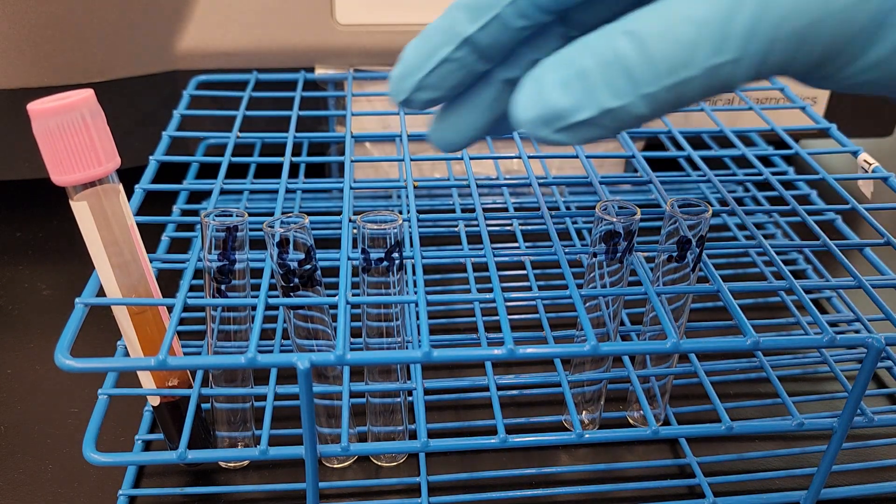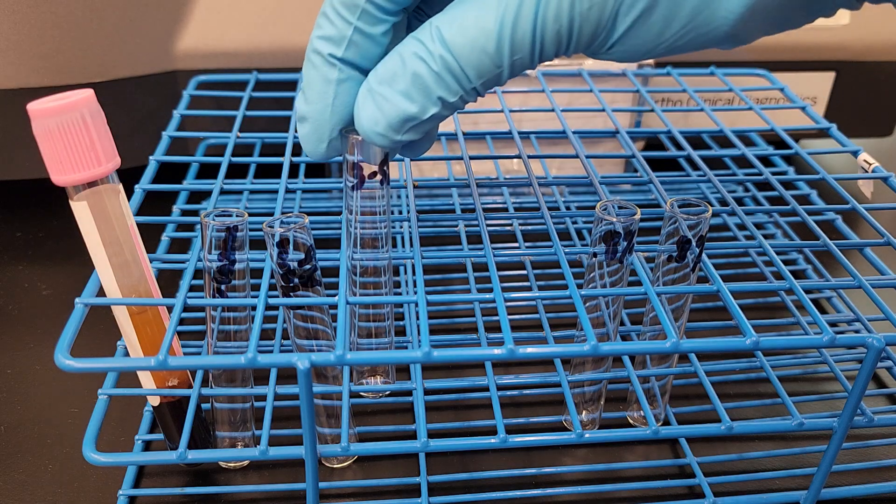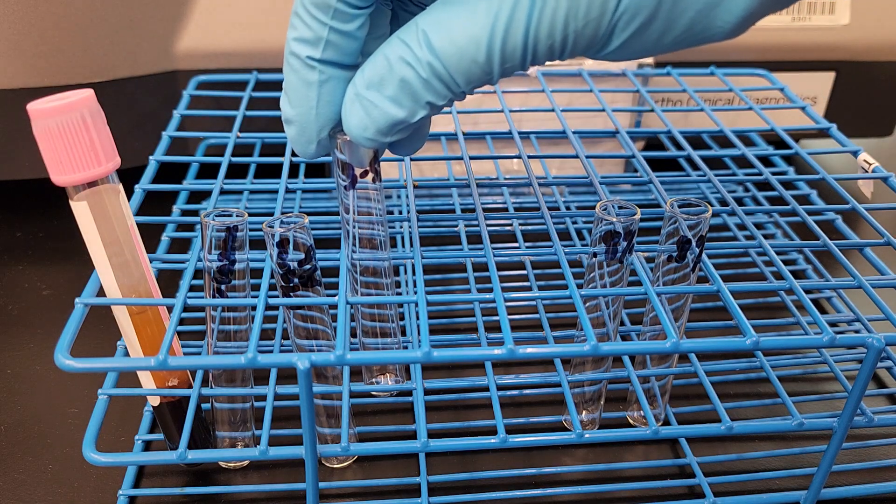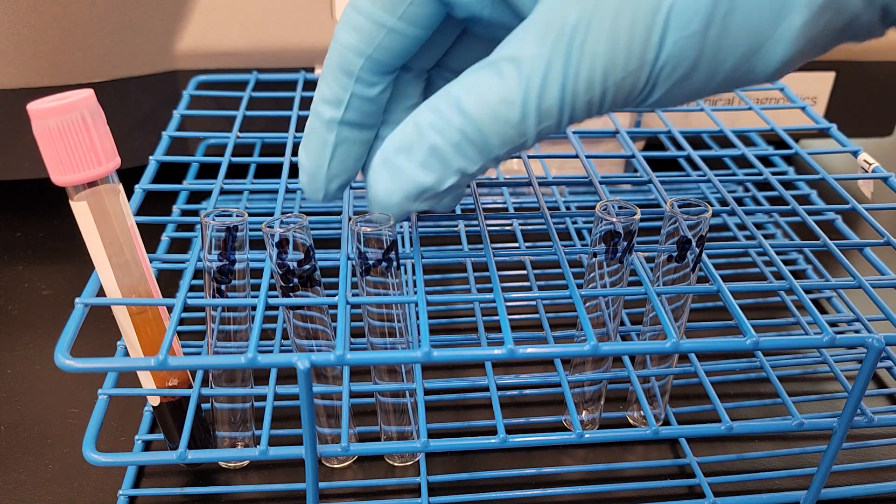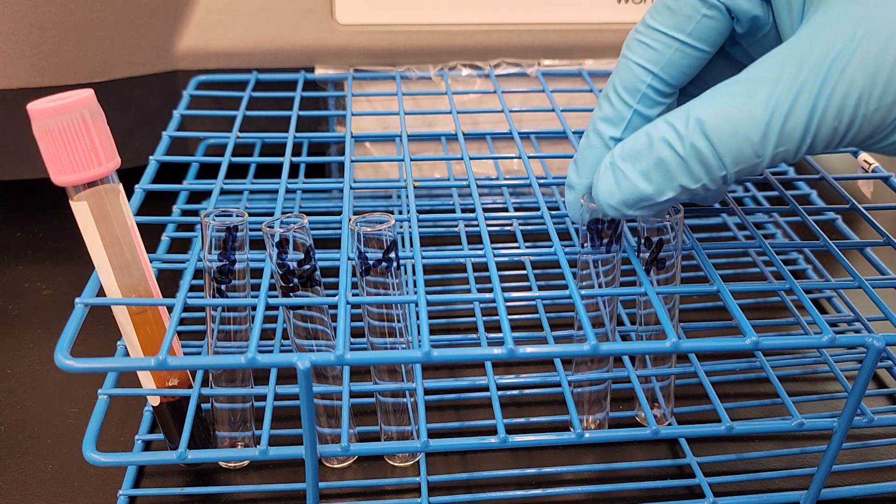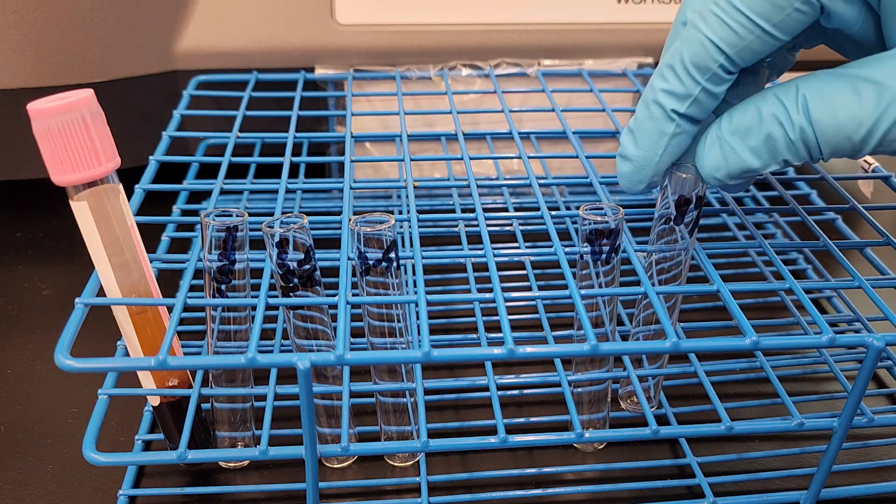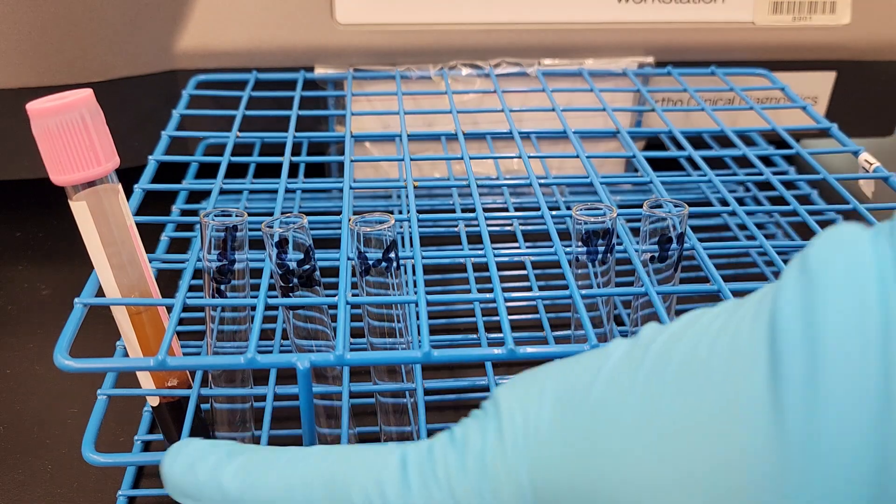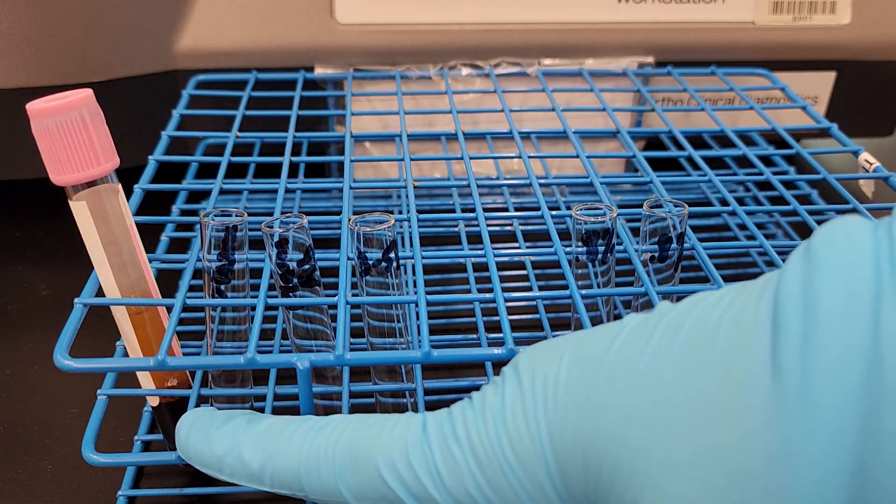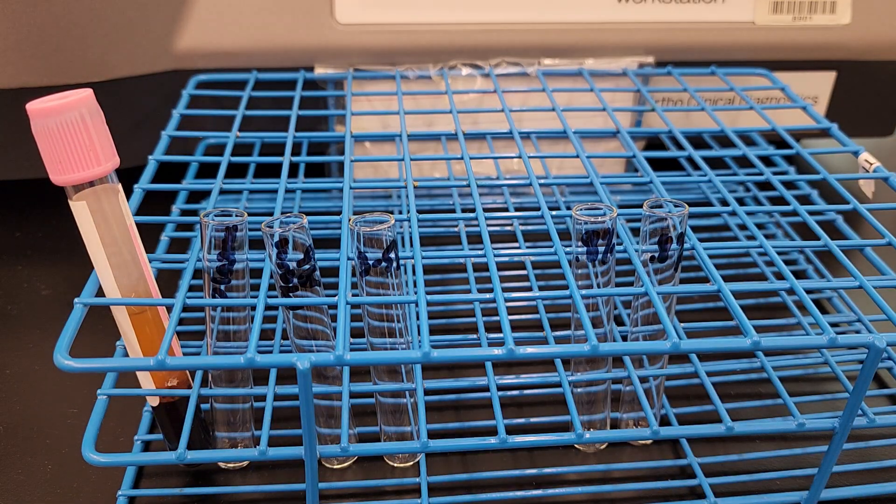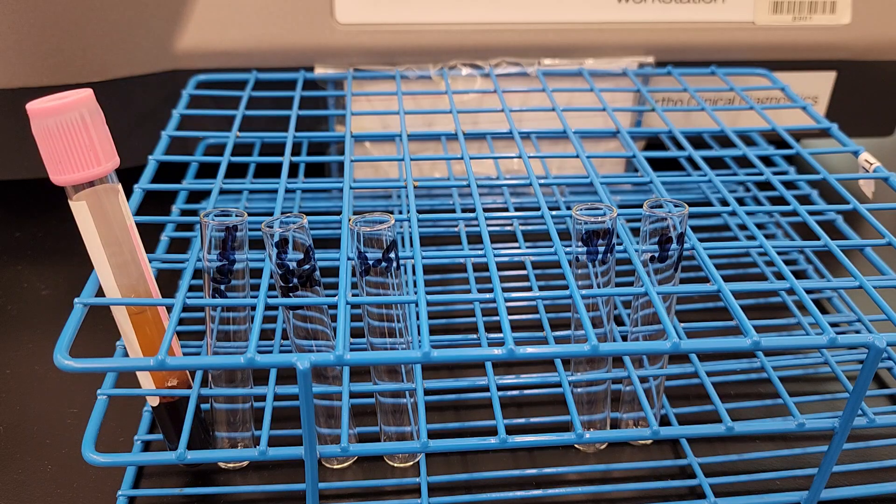So we're going to learn how to make it from a 3 to 5% red cell suspension that you would use with the tube method into a 0.8%. But we're also going to learn how to do a 0.8% immediately from the packed red cells in your spun EDTA tube. So let's go ahead and get started.